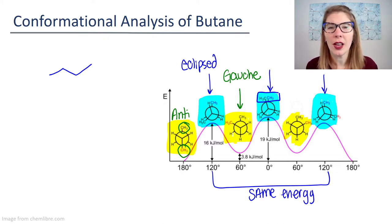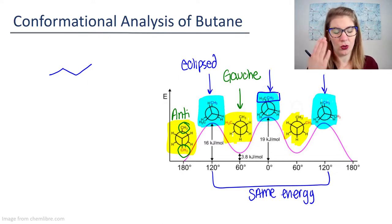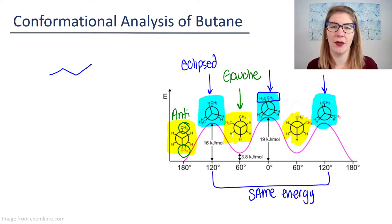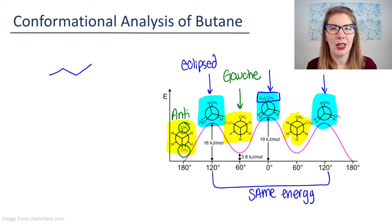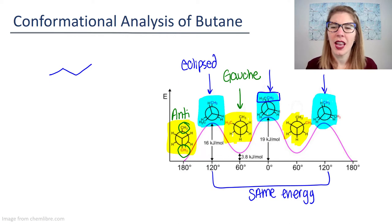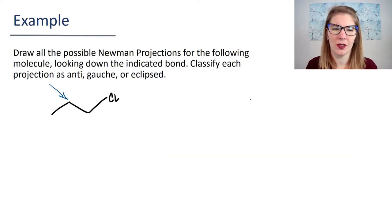What I want you to be able to do is draw all the Newman projections for a certain conformation and then label them. Are they anti? Are they gauche? Are they eclipsed? Which one's the highest energy? Which one's the lowest energy? I have an example for you to try on the next page.